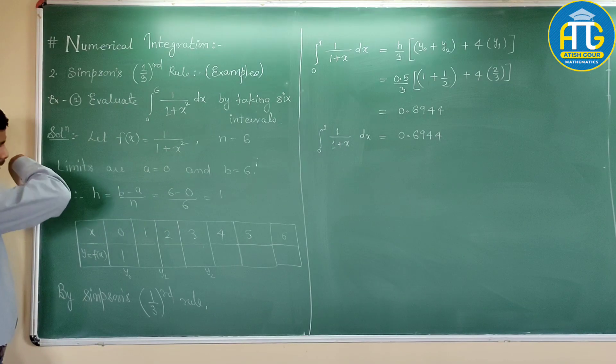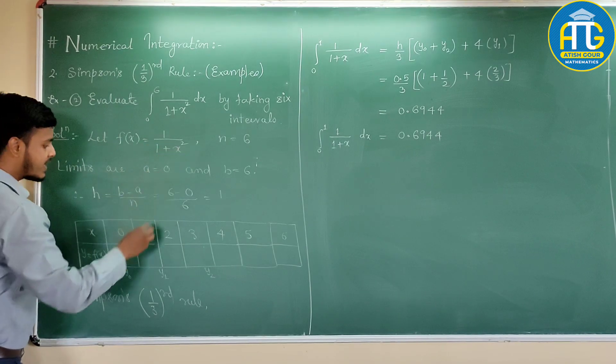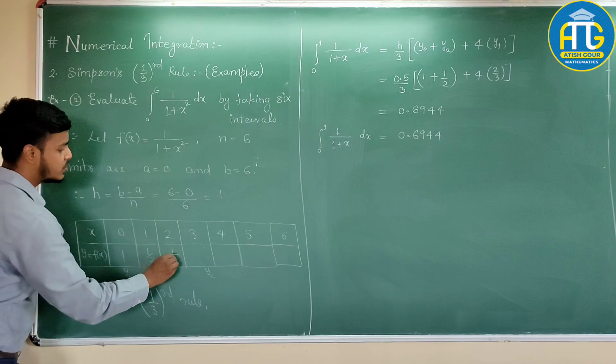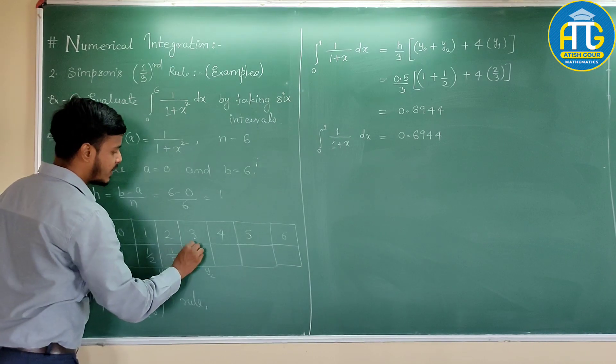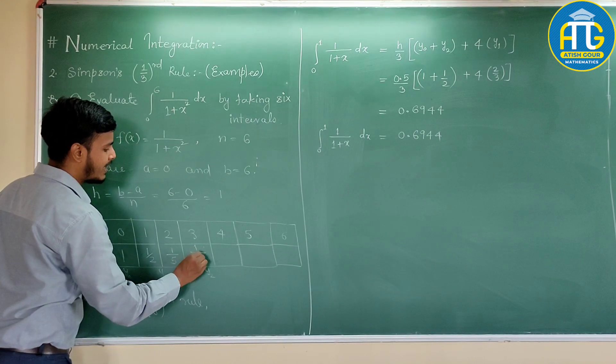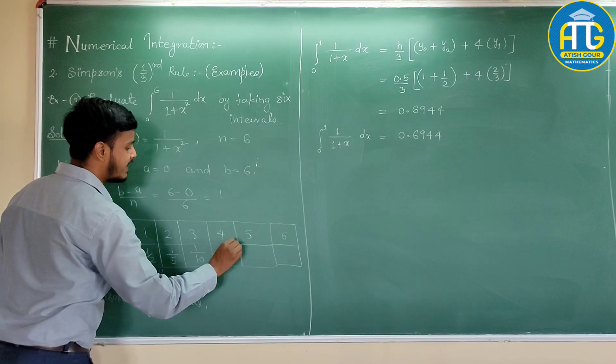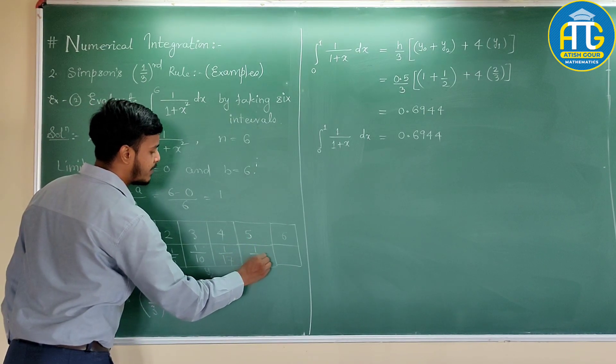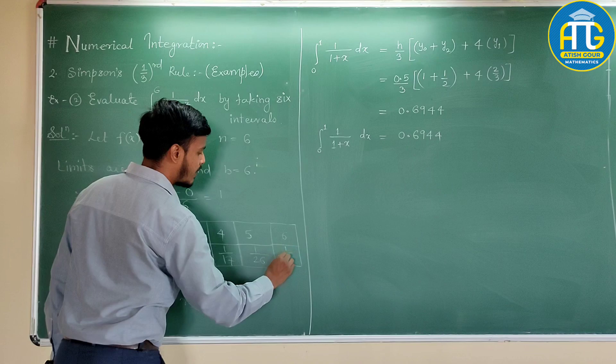Now substitute these values over here. 1 upon 1 square, that's 1 by 2. 1 upon 1 plus 2 square, that's 5. 1 upon 1 plus 3 square, 10. 1 by 17. 25 plus 1, 26, and this is 1 by 37.